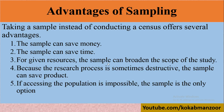Why do we do sampling? There are reasons and advantages. It saves money — it is better to ask 10,000 or 20,000 people than 22 crore people. And obviously it saves time as well. For a given set of resources, the sample can be broadened to expand the scope of the study.